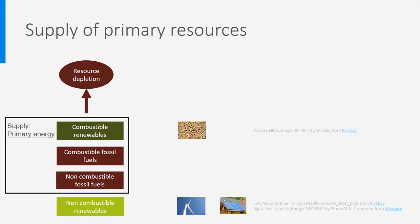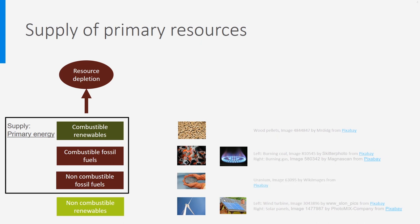Let's go now to the fossil fuels, the two brown boxes in the middle which are responsible for resource depletion. The combustible ones are well known — think of coal, gas or oil. As for the non-combustible ones, we are talking about resources like uranium for nuclear energy, or hydrogen for fuel cells when it is produced by reforming of natural gas.